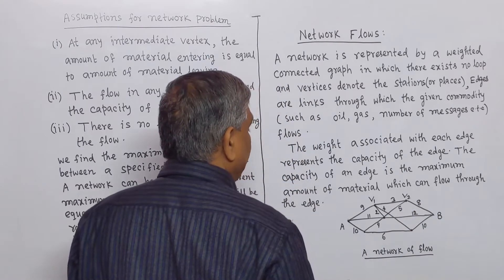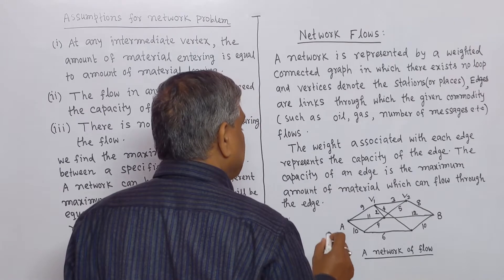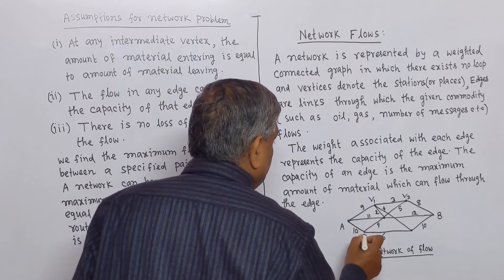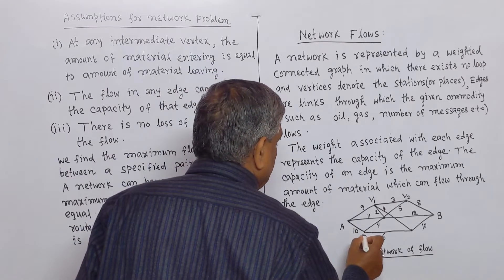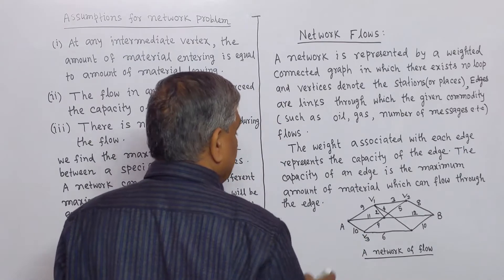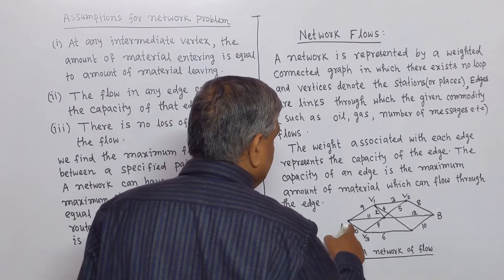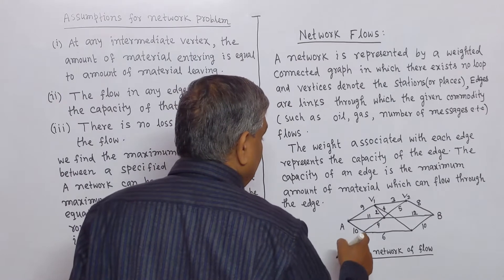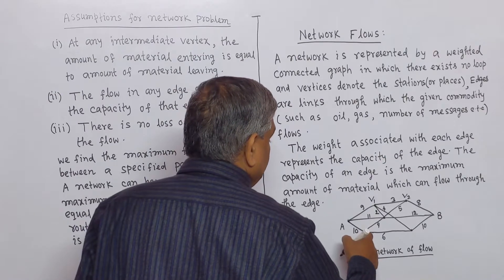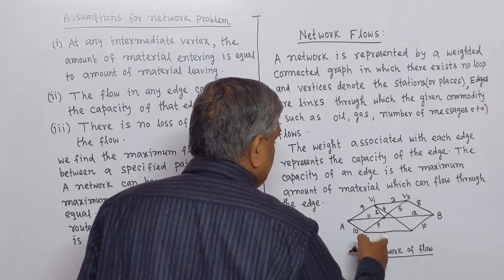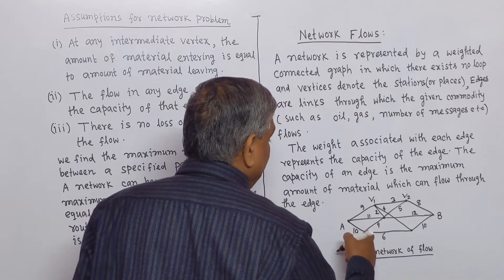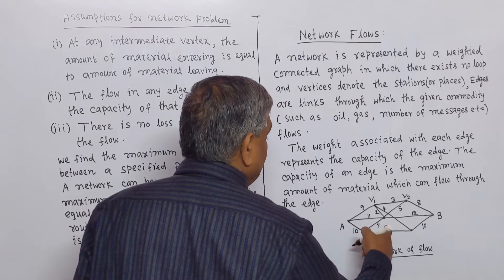Similarly, at vertex V3, 10 units of material are entering, and 6 plus 4 equals 10 units of material are leaving. So conservation holds at every intermediate vertex.